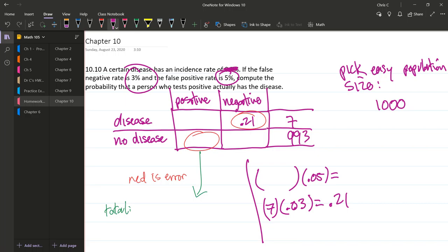Here's our 3% and there's seven people total. So seven times 0.03. I'm using a separate calculator here. And we got 0.21. So that's how many people have the disease and test negative.